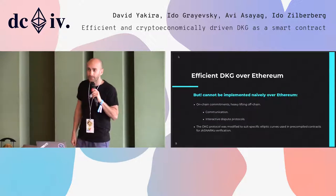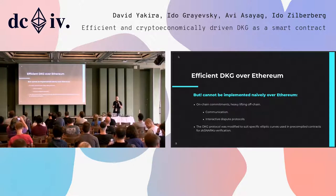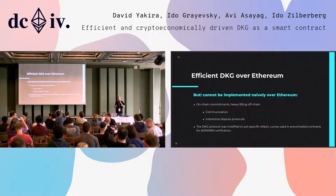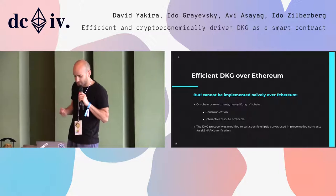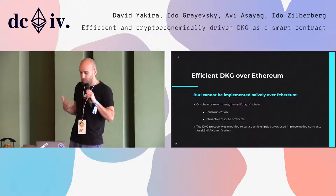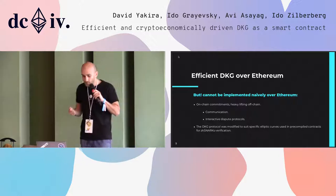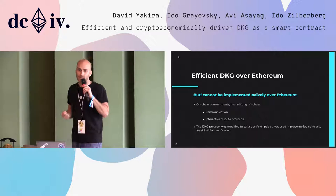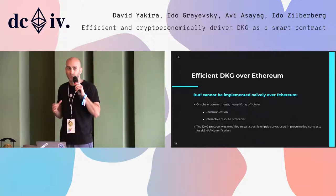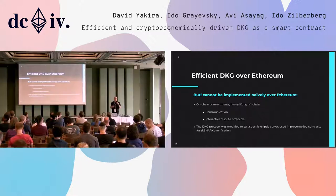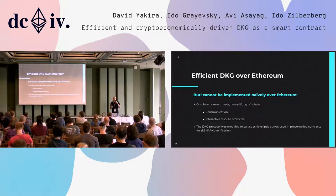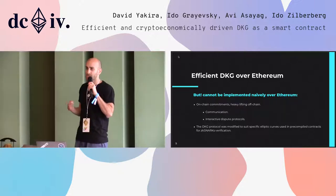Let me finish up by giving you a taste of how we actually solve the technical problems, because the DKG is very computation- and communication-expensive. Our general approach is to do as much as possible off-chain. In terms of communication, except for a 32-byte commitment that participants include in their enrollment transaction, basically all communication can be done off-chain. For the dispute mechanism, if any participant files a complaint, this expensive computation has to be done on-chain to verify who was correct and who was faulty.